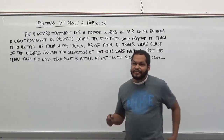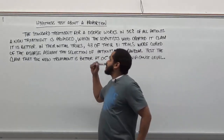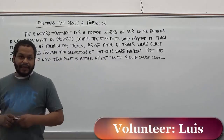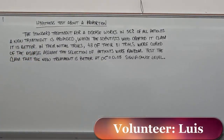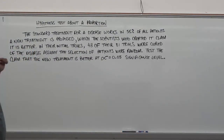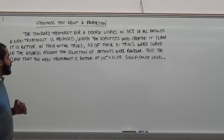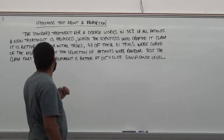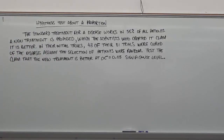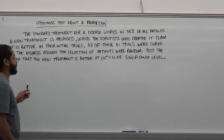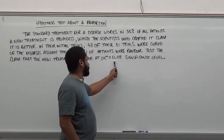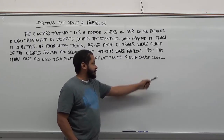Welcome to HelpYourMath.com. In today's video, we're going to be covering hypothesis tests about a proportion. In this problem, the standard treatment for a disease works in 55% of all patients. A new treatment is proposed which the scientists claim is better. In their initial trials, 48 of their 81 trials were cured. Assume the selection of patients was random. Test the claim that the new treatment is better at an alpha level of 0.05 significance level.